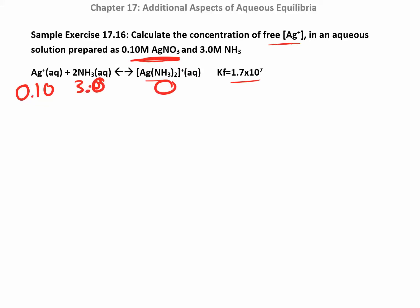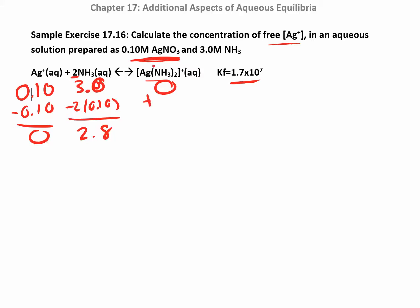The first step: I'm going to assume I use up all the silver first, then backtrack. I can make that assumption because this K is huge — the reaction goes all the way forward. I use up all my silver, so none remains. For every one mole of silver I use, I use two moles of ammonia, so I subtract 0.2 from 3.0, giving 2.8 M ammonia. And since I make one mole of complex ion, I add 0.1, giving 0.1 M complex ion.